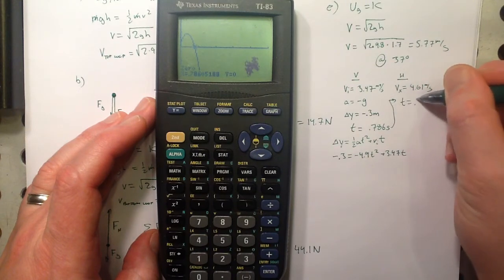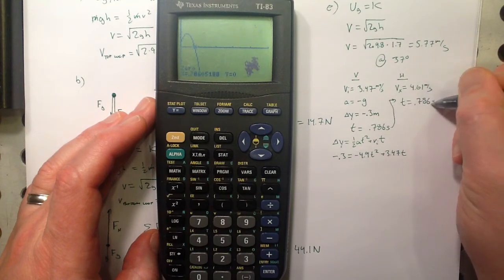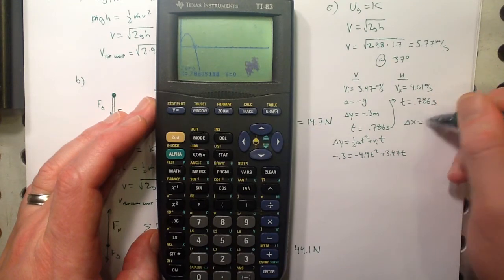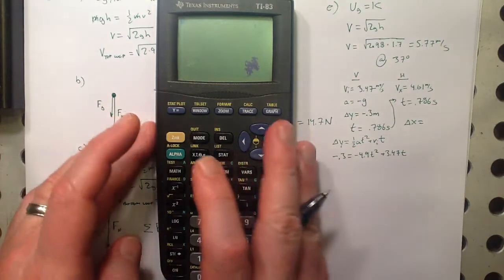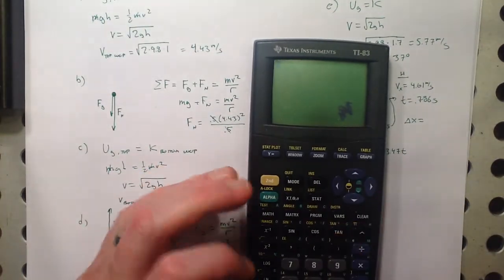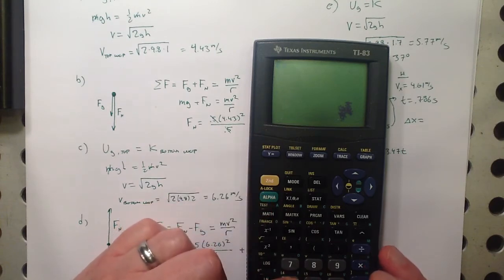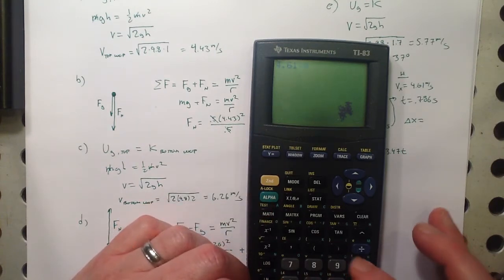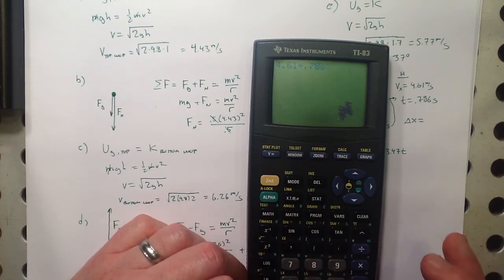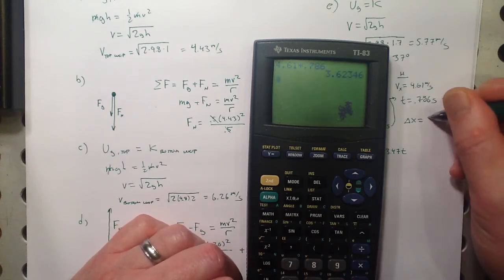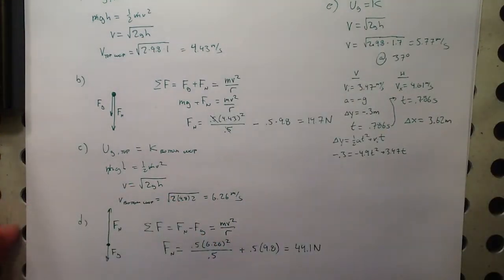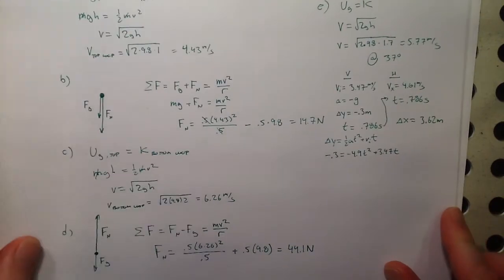That's the time in the air. Delta x equals the horizontal velocity times time — constant velocity, so distance equals speed times time: 0.461 times 0.786, which gives about 3.62 meters for the horizontal range.